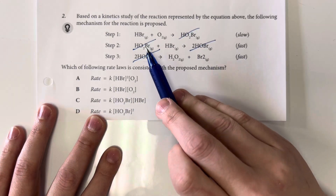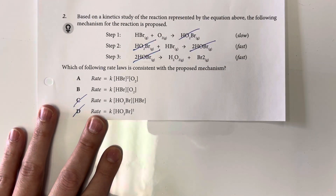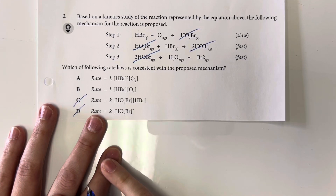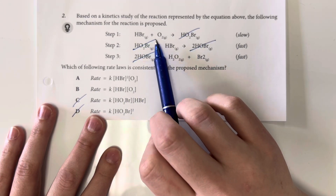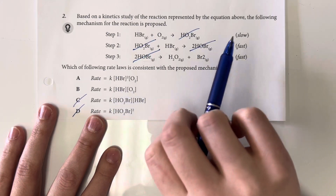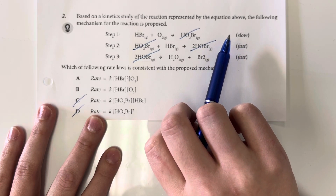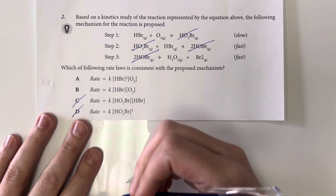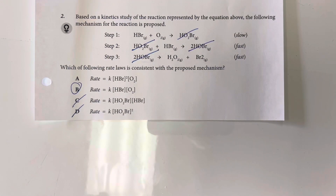Now we just need to figure out between option A and option B which is the best choice. The reaction between hydrobromic acid and oxygen is a relatively slow reaction, which means increasing concentration is not going to significantly speed it up. So it is most likely a first-order reaction, not second-order. Option B is the best choice.